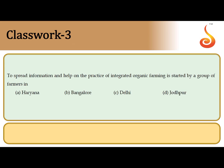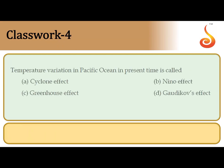The third question: to spread information and help the practice of integrated organic farming, it was initiated by a farmer called Ramesh Chandra in Haryana, in a village called Sonipat. There is a lot of awareness about integrated organic farming through his Haryana Kisan Club. So the correct answer is option A.